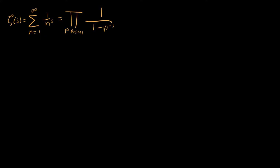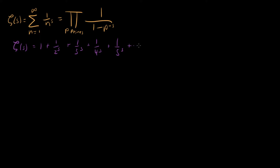So how do we actually go through and show this? Let's start by writing some partial sums for the Riemann zeta function. Our zeta function is 1 plus 1 over 2 to the s plus 1 over 3 to the s plus 1 over 4 to the s plus 1 over 5 to the s, and so on.